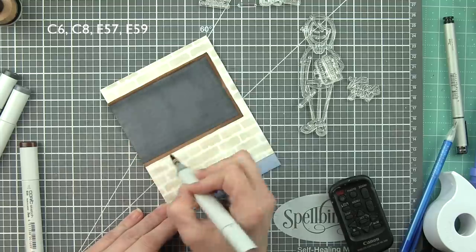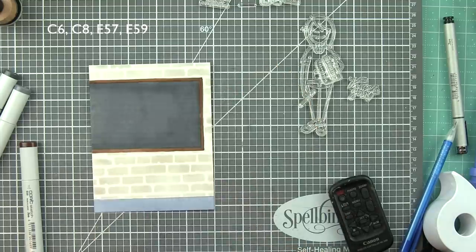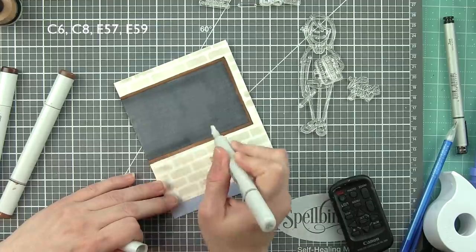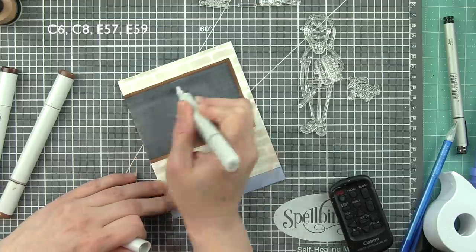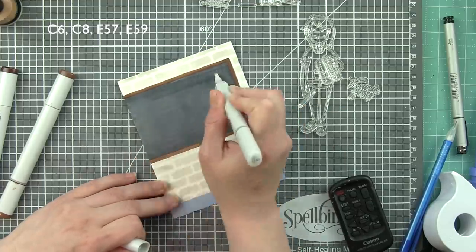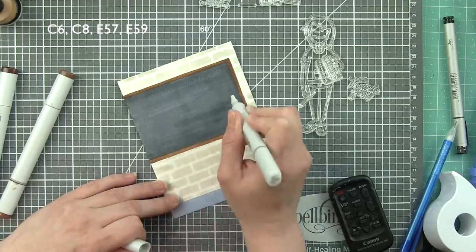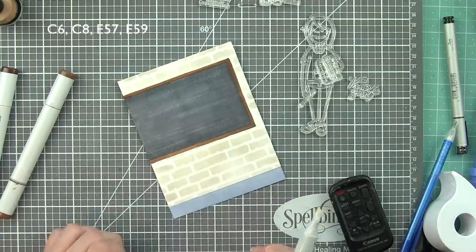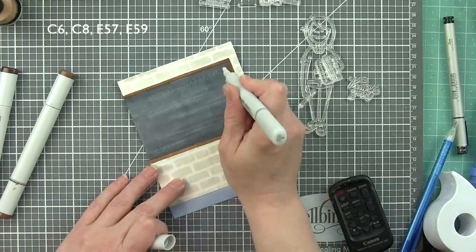I did, I know I've sped this up quite a bit, but I did quick coloring here. There's no need to go in crazy. Now this is where the magic happens with the chalkboard. This is the colorless blender. It is not a blender. It actually removes the ink. And where I place this, it starts lightening because it's moving and pushing that ink out and away.